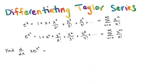The example that we're going to work with today is e to the x. Here's our foundation for everything. E to the x is equal to 1 plus x plus x squared over 2 factorial plus x cubed over 3 factorial and so on. If we want to write that using summation notation, that is the sum from n equals 0 to infinity of x to the n over n factorial.